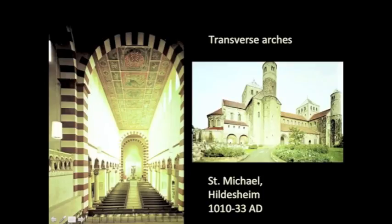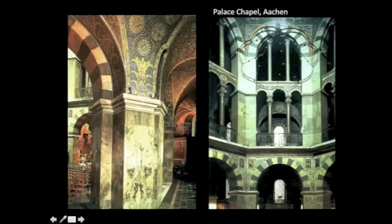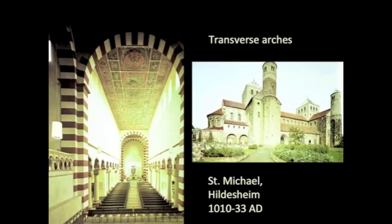Here's an interior view of Saint Michael's transverse arches marking out the space — fabulous. Polychromatic stonework, kind of like the stonework we saw in the palace chapel in Aachen, Charlemagne's chapel. So there's a lot of quotation of the architecture of the Carolingian period, as well as quotation of the architecture of Rome.